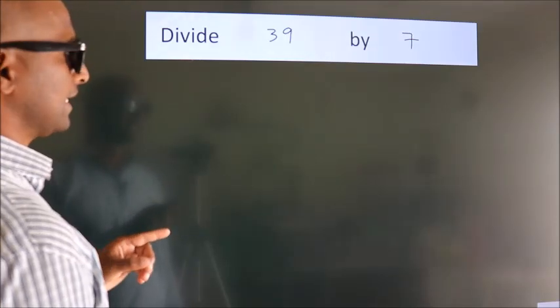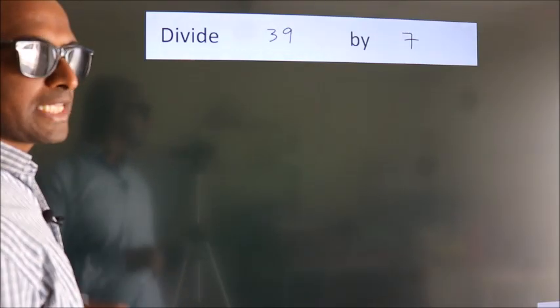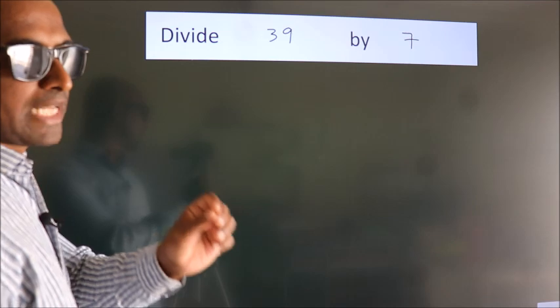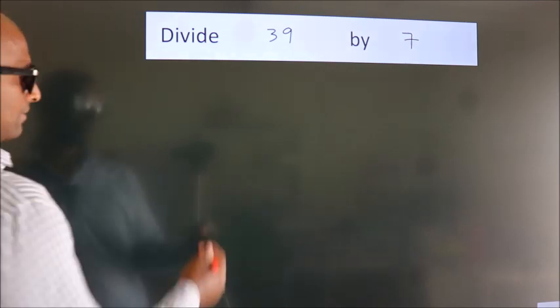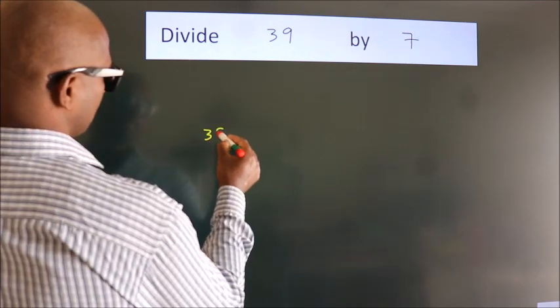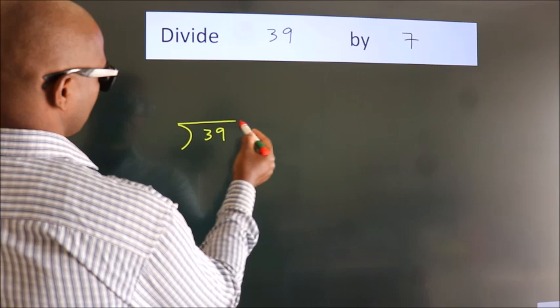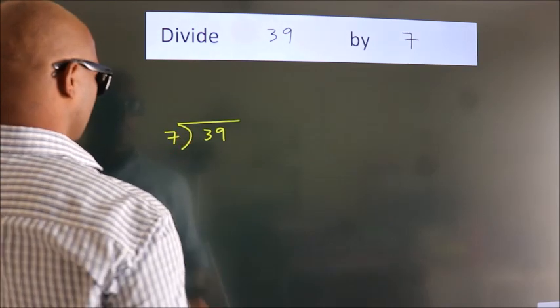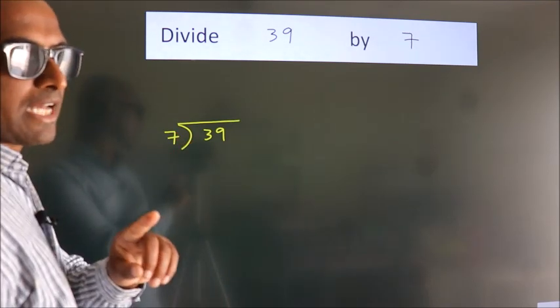Divide 39 by 7. To do this division, we should frame it in this way. 39 here, 7 here. This is your step 1.